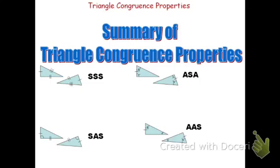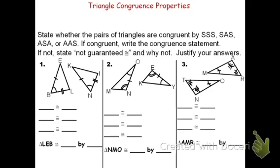Now let's look at three examples of how we can prove triangles are congruent. Each problem asks us to identify which congruence property — side-side-side, side-angle-side, angle-side-angle, or angle-angle-side — is used to prove congruence. If it is congruent, we will write a congruence statement saying which triangles are congruent and how we know. If it is a property that does not prove congruence, all we can say is that they are not guaranteed congruent — they might be congruent, they might not.